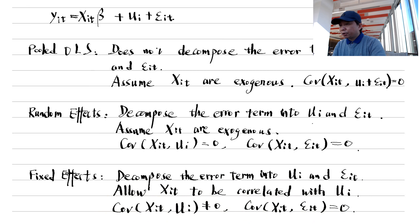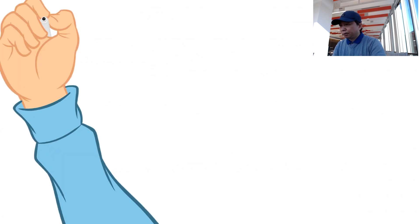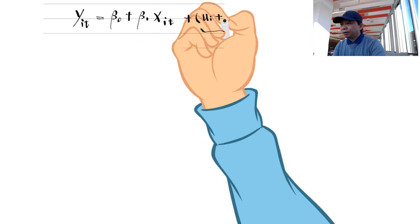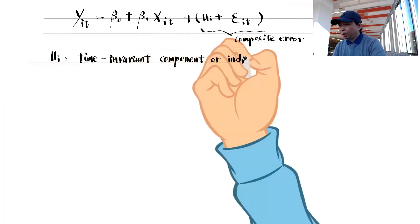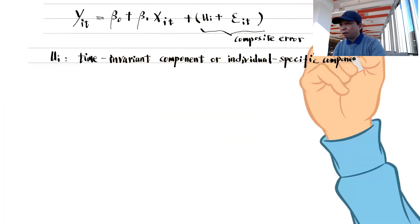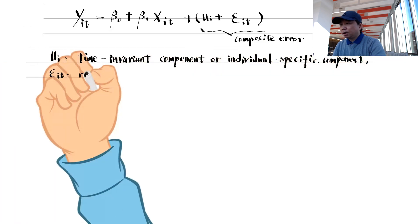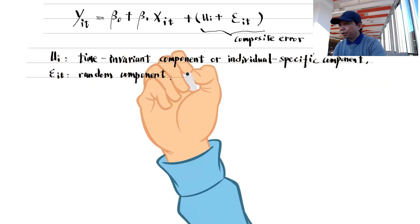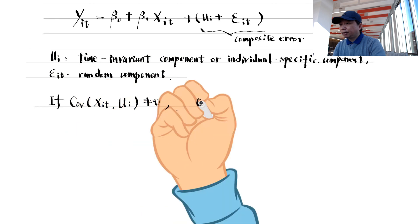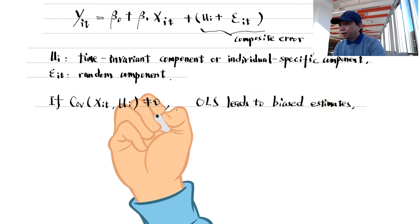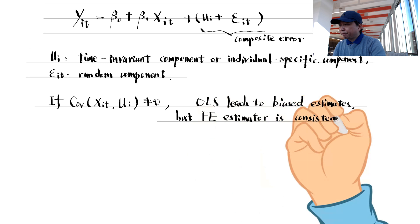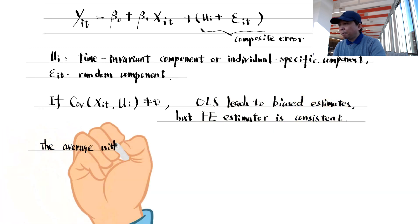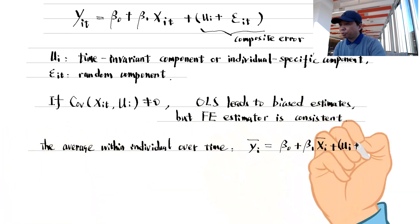Today, we will explore the fixed effects demeaning method. We remember that it takes a long time to estimate using the dummy variables approach when there are many individuals. A more commonly used method for individual fixed effects is the demeaning method. It is also the method Stata adopts when we use the xtreg command with the fixed effects option.